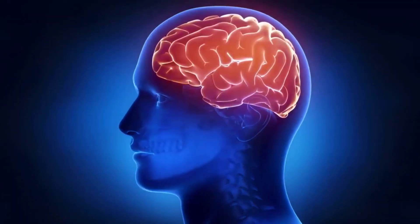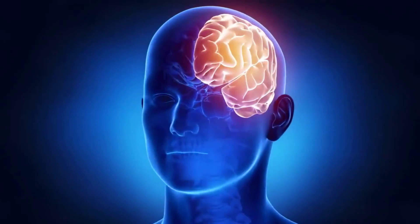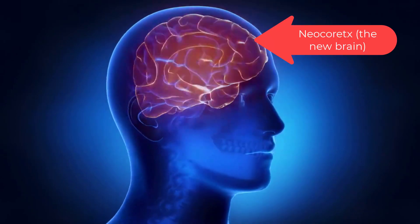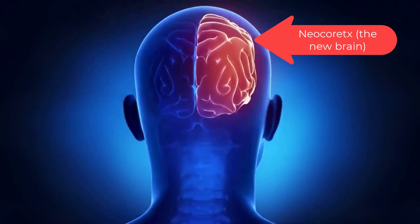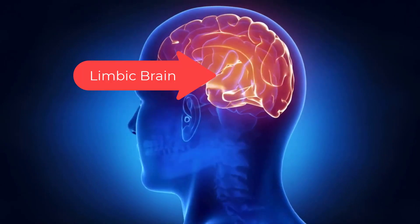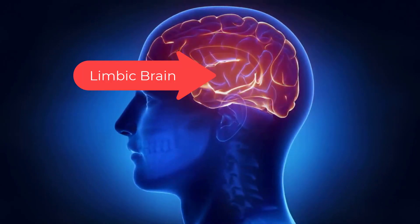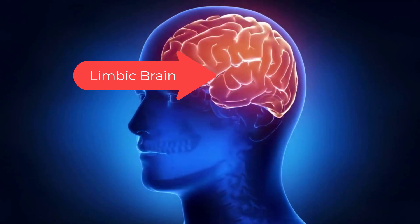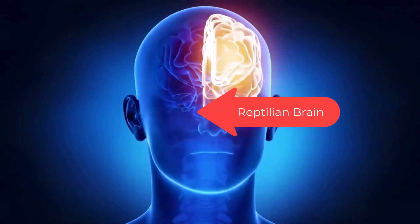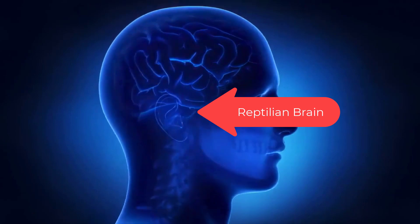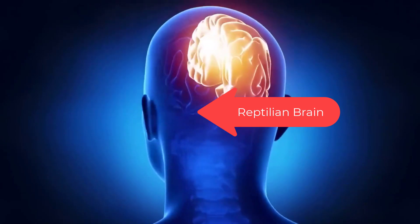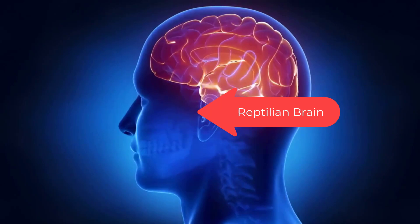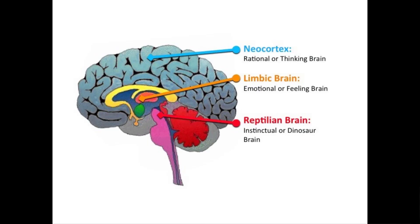Your brain has three basic layers and only one real decision maker. The new brain — the neocortex — thinks and processes rational data. The middle brain — the limbic brain — feels emotions and controls the fight-or-flight instinct. The old brain — the reptilian brain — decides. It can take input from the other brains but can also decide faster than the blink of an eye, then use the other brains to justify the decision. The reptilian brain is visual and hardwired into the brain stem.